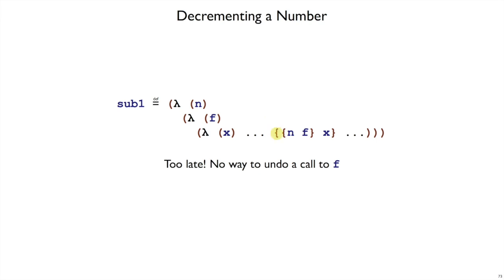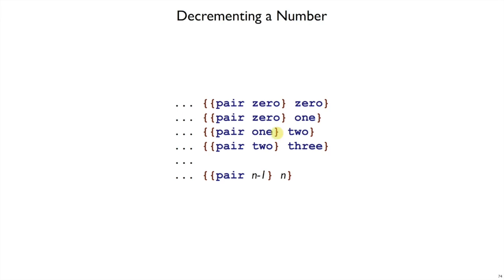But it turns out to be on the right path. We just need to remember the previous number that we had in addition to the next number that we get. That is, if we start out with, say, 0 and 0, and if we always take the second part and shift it to the first part while incrementing the second part, then we'll end up with this pattern.